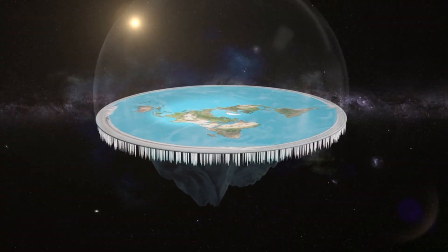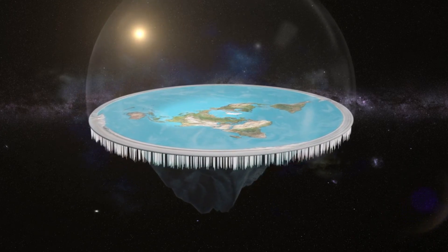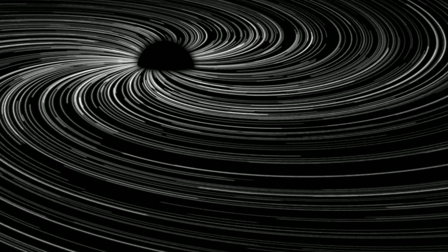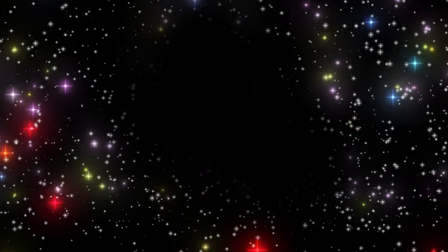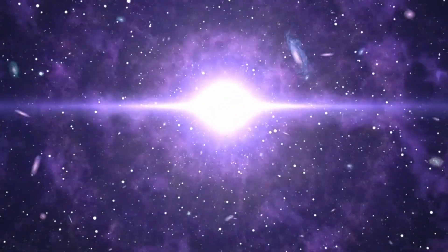The shape of the universe isn't just an abstract curiosity. It's closely tied to its density and expansion rate. If the density of matter and energy in the universe is exactly the critical density, the universe would be flat. If the density is higher, the gravitational pull of all that mass would curve the universe into a closed shape. Conversely, a lower density would result in an open universe. These factors also influence the universe's ultimate destiny, determining whether it will expand forever, collapse back on itself, or settle into a stable state.